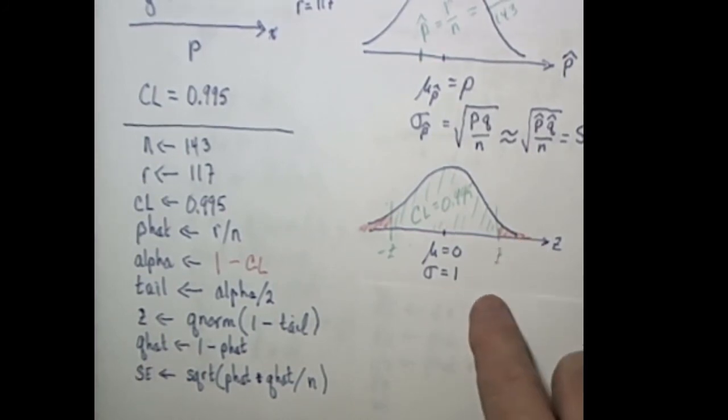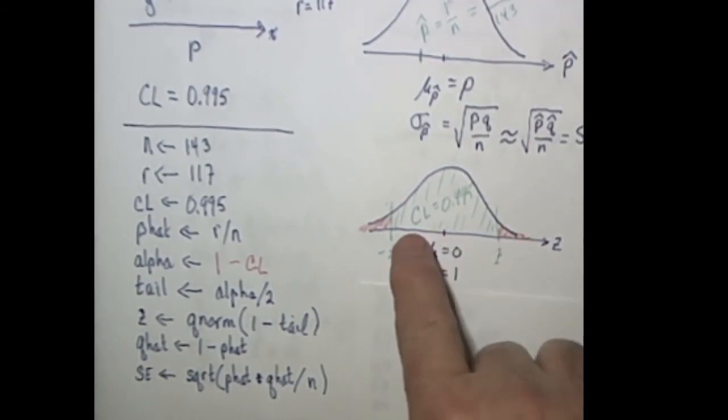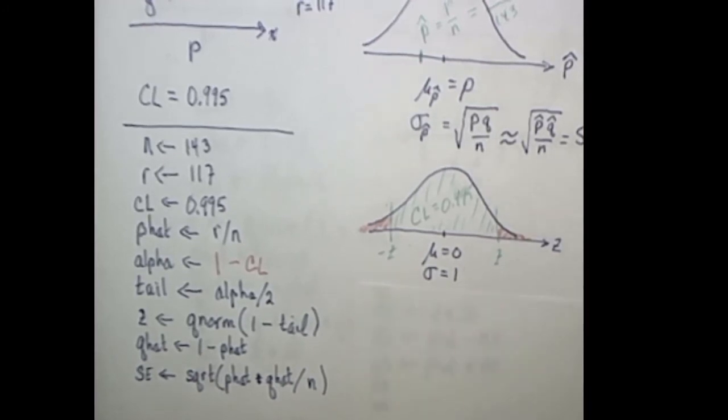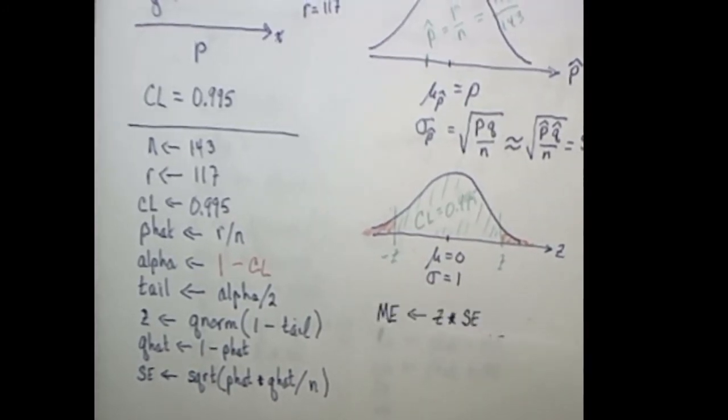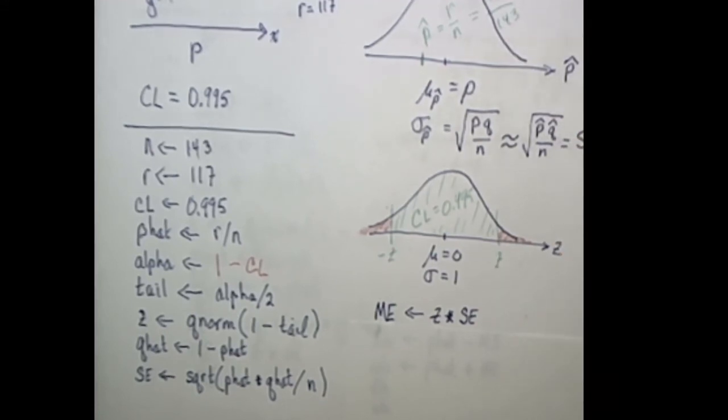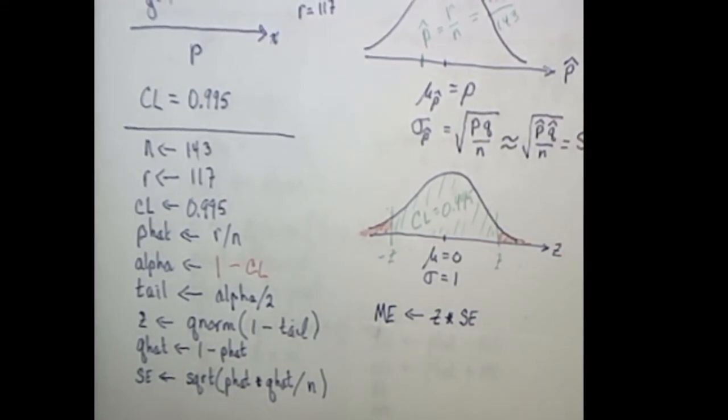We know that z is telling us the number of standard deviations I need to be away from the mean to have 99.5% between minus z and z. And so therefore we'll calculate the margin of error, which is going to be z, the number of standard deviations we need, times se, which is our best approximation for the standard deviation.